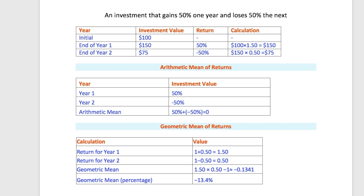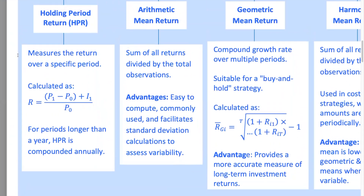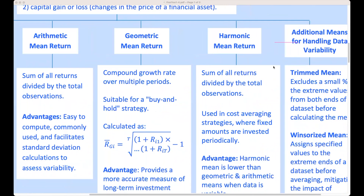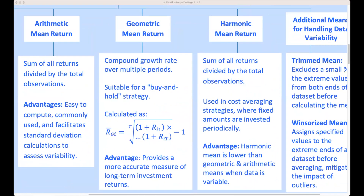To recap: the arithmetic mean simply adds up your returns and divides by the number of periods, while the geometric mean takes into account how those returns compound over time. That's why the geometric mean often gives a more accurate picture of your investment's performance, especially when returns are volatile. Finally, the harmonic mean is useful when dealing with averages of ratios, like prices per share. It gives more weight to lower values and is used when averaging rates over time. For instance, if you travel the first half at 30 miles per hour and the second half at 60 miles per hour, the harmonic mean gives a more accurate measure of your average speed.